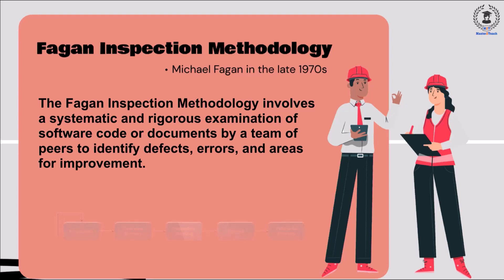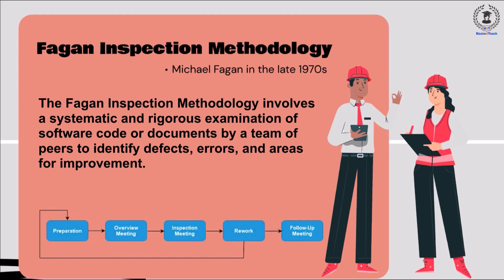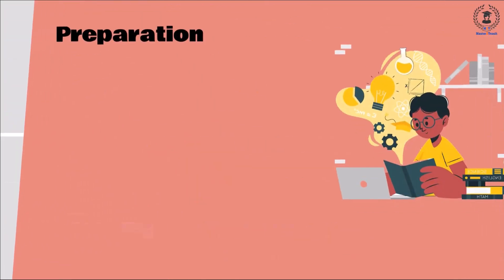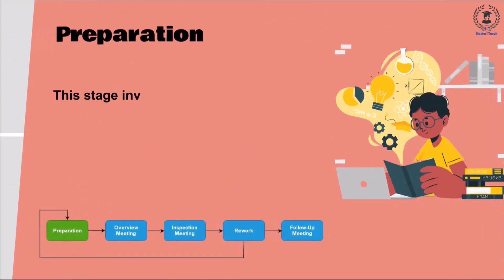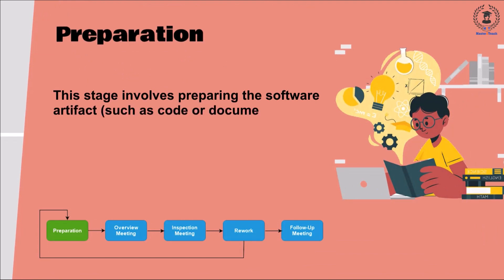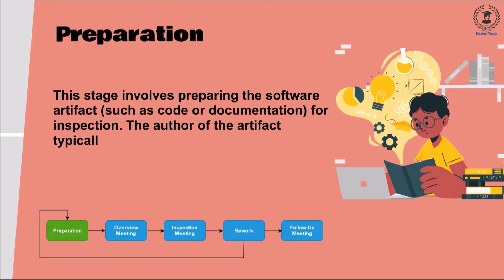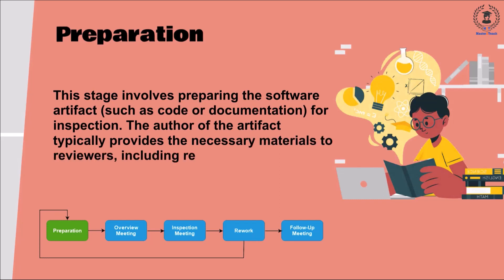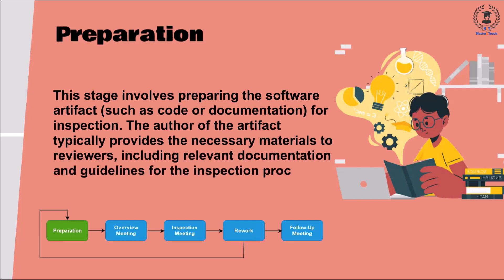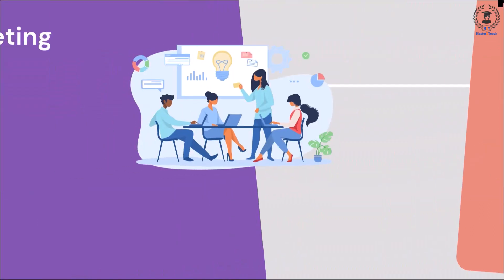The key components of the Fagan inspection methodology include Preparation. This stage involves preparing the software artifact, such as code or documentation, for inspection. The author of the artifact typically provides the necessary materials to reviewers, including relevant documentation and guidelines for the inspection process.